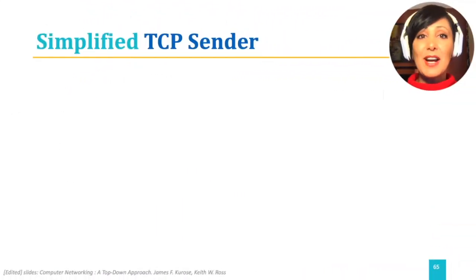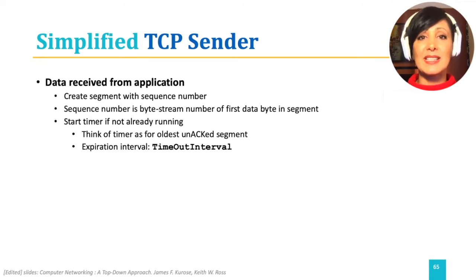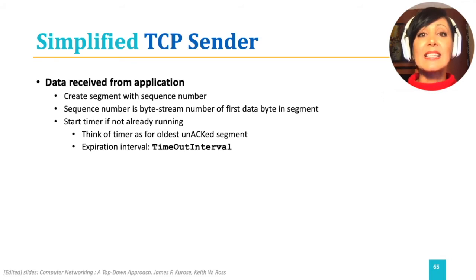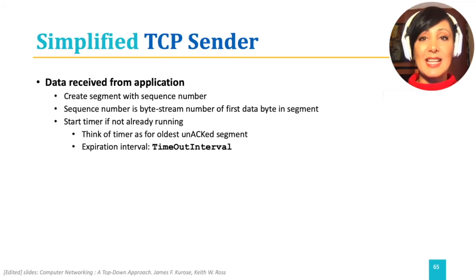In our simplified TCP version, the TCP sender receives data from the application, creates a segment with a sequence number — which is the byte stream number of the first data byte in the segment — and sends it. It starts the timer if it's not already running, since the timer is for the oldest unacknowledged segment.